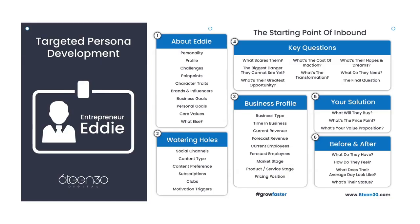That's the Watering Holes section. The third part — the Business Profile — mainly comes into play for B2B. If it's B2C, you'd focus more heavily on the About section. But because Entrepreneur Eddie is a B2B customer, we're going to go into this in more detail. I'll throw in some B2C alternatives too, so if you're B2C only, you'll still get value.